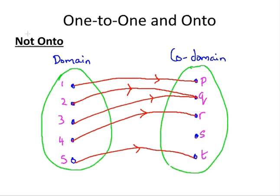Here's an example of a function that is not onto. We can see there is an image for each element, but looking at the co-domain: p has one ancestor, q has two ancestors, r has one ancestor, but s has no ancestors at all. So in this case, the function is not onto.